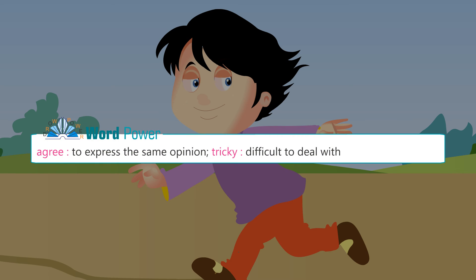Word Power — Agree: to express the same opinion. Tricky: difficult to deal with.